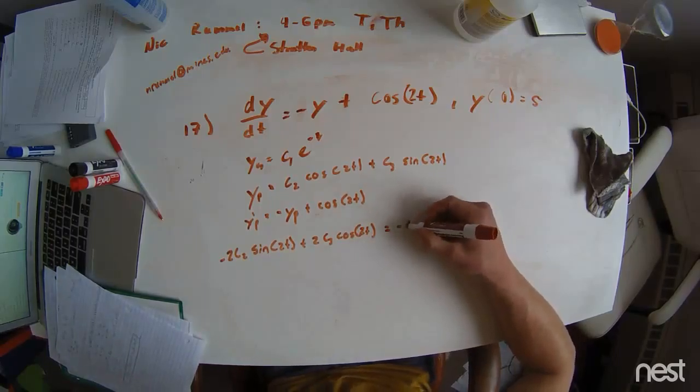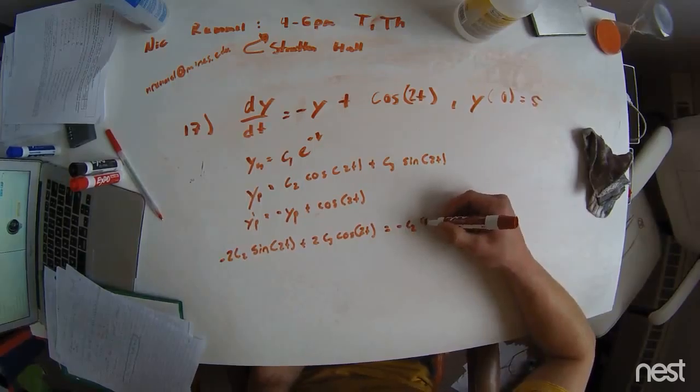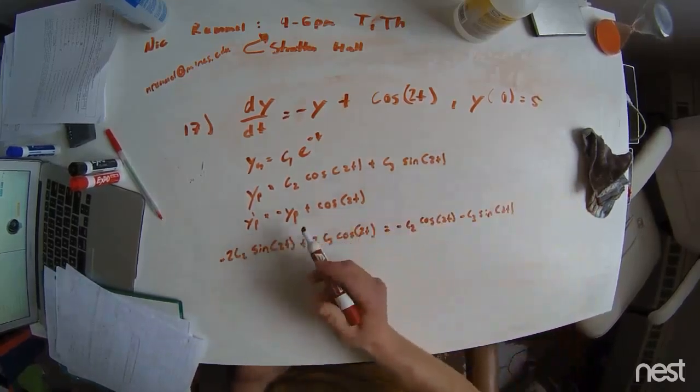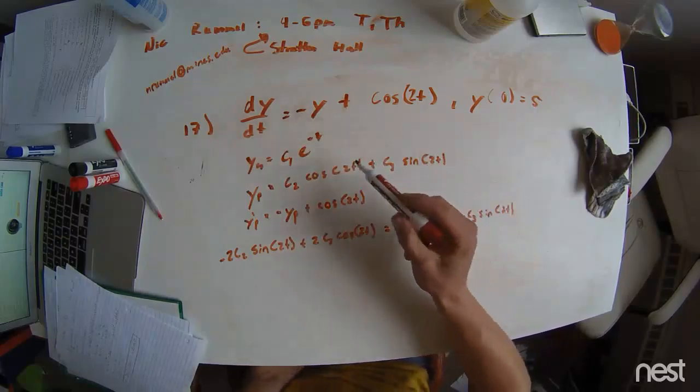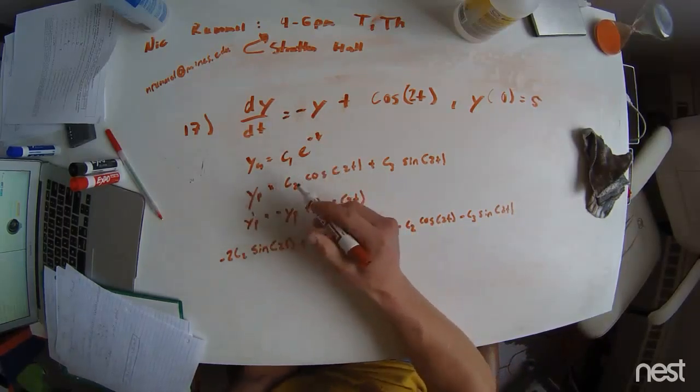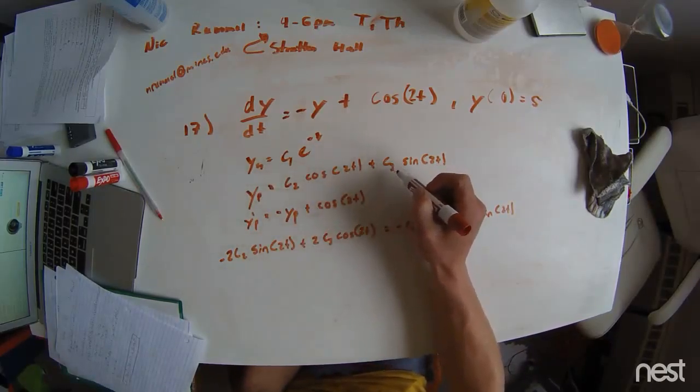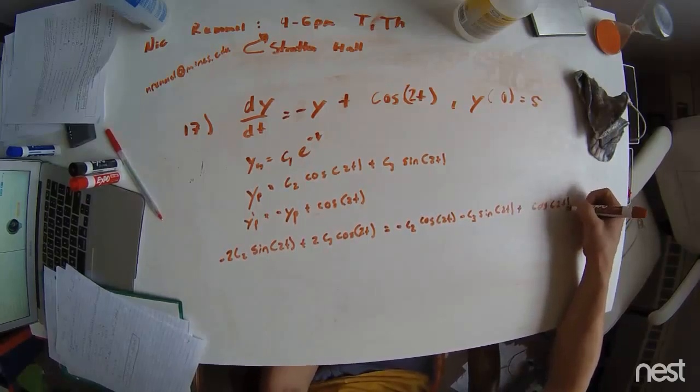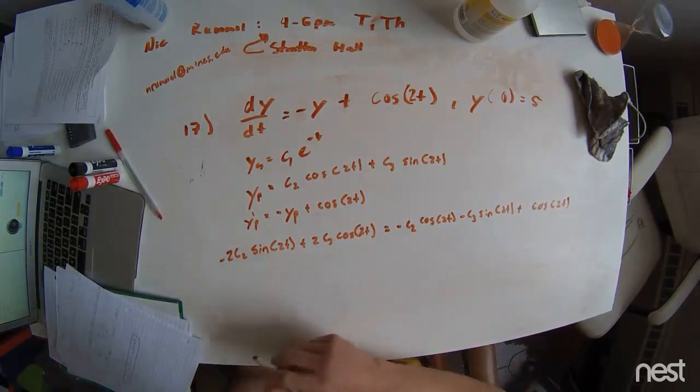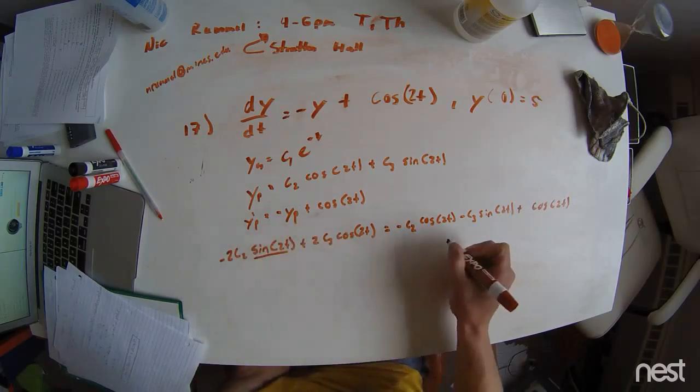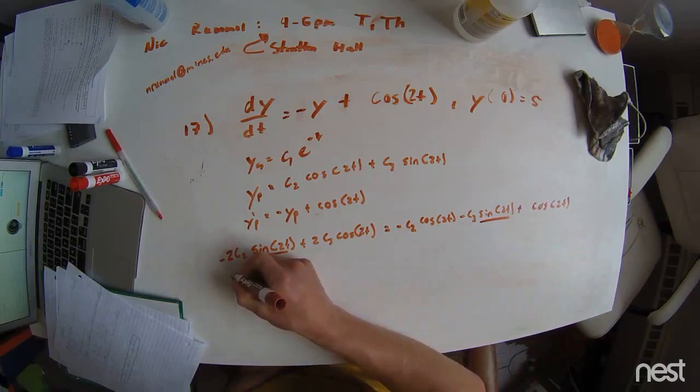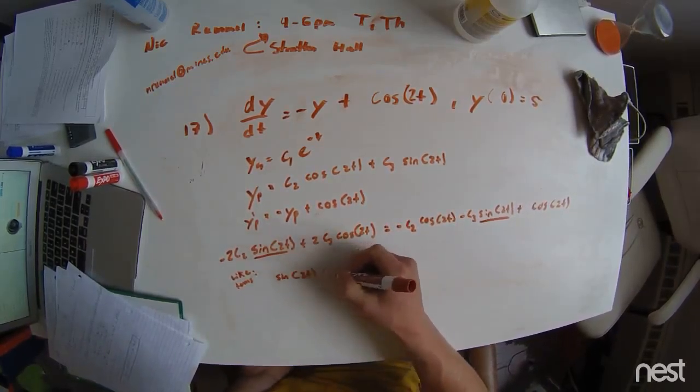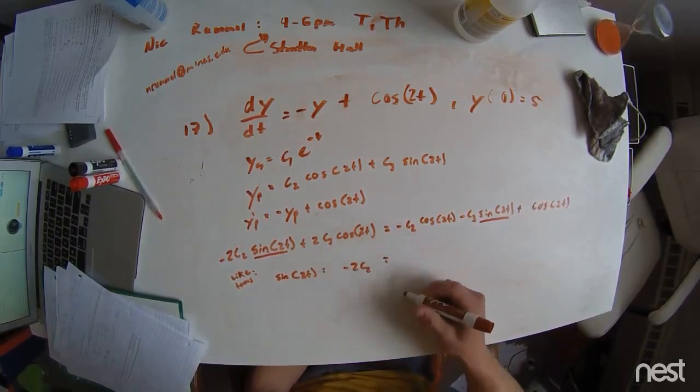Over here, we're going to get a negative c2 cosine of 2t minus c3 sine of 2t. And the reason for that being is we have this negative right here, and that's going to distribute into our y-particular, which is this. So negative times y-particular is negative c2 cosine of 2t minus c3 sine of 2t. And then we have this term still remaining, so we have a plus cosine of 2t. And we now just look at like terms. We consider our sine terms first.